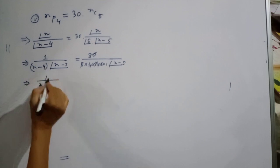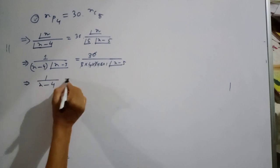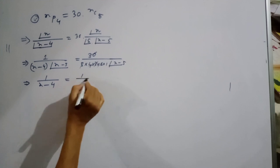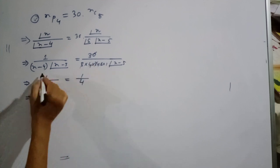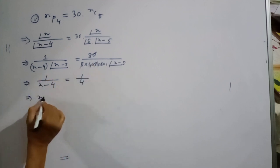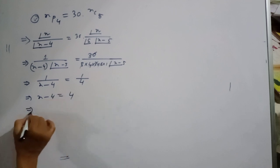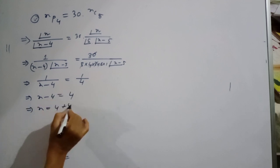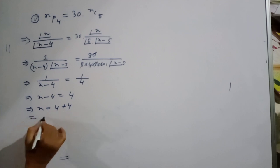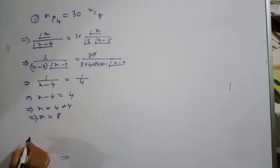Cross multiplying: n minus 4 is equal to 4, so therefore n equals 8.